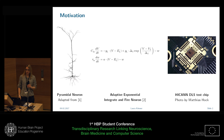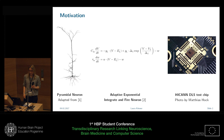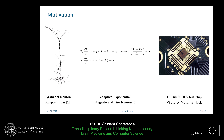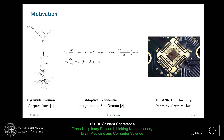As Gerd and Sebastian already told you, our group builds accelerated low-power neuromorphic hardware, and we are doing this by designing circuits that follow the same differential equations as theoretical neuron models. On the current prototype chip that Sebastian and Gerd showed you, this neuron model is the adaptive exponential integrate and fire neuron, which Mihaly already mentioned briefly.